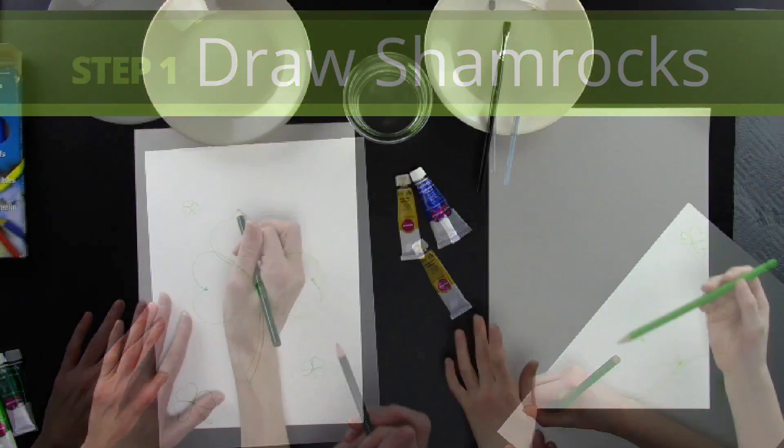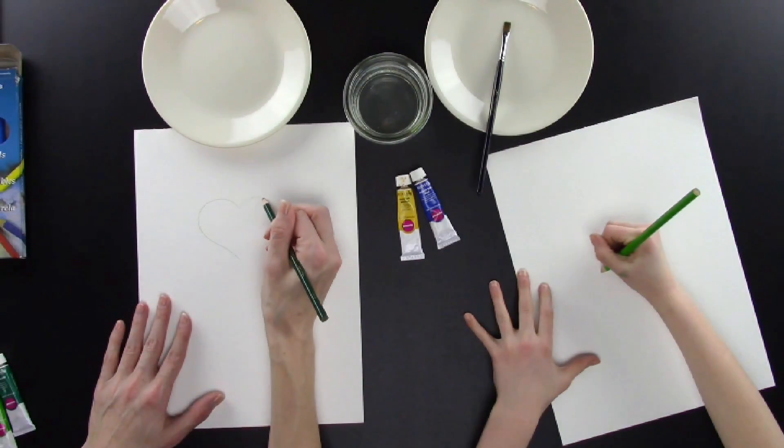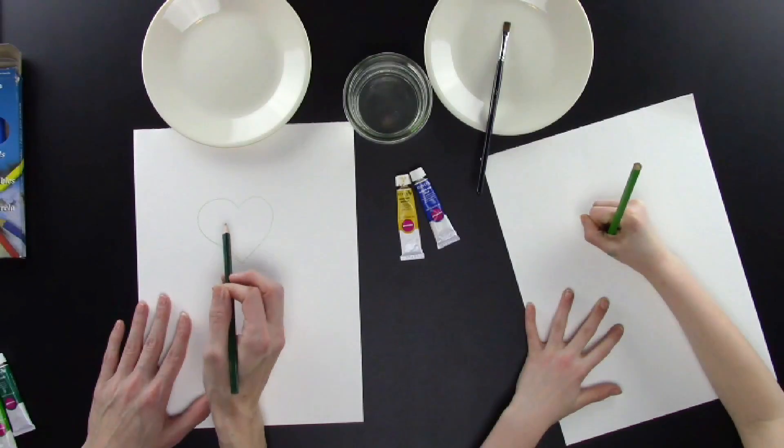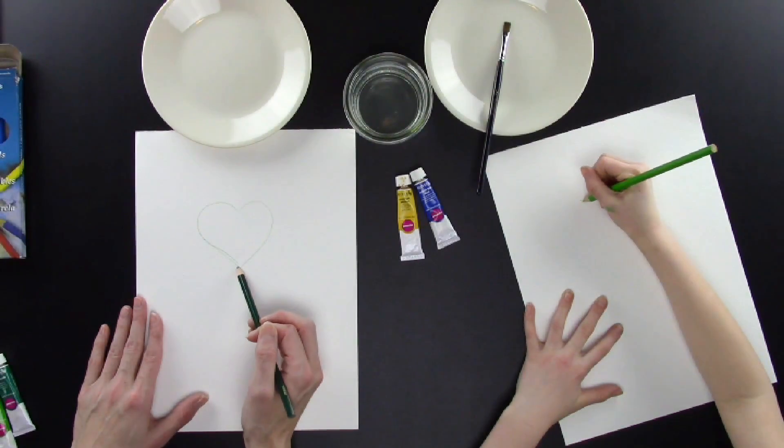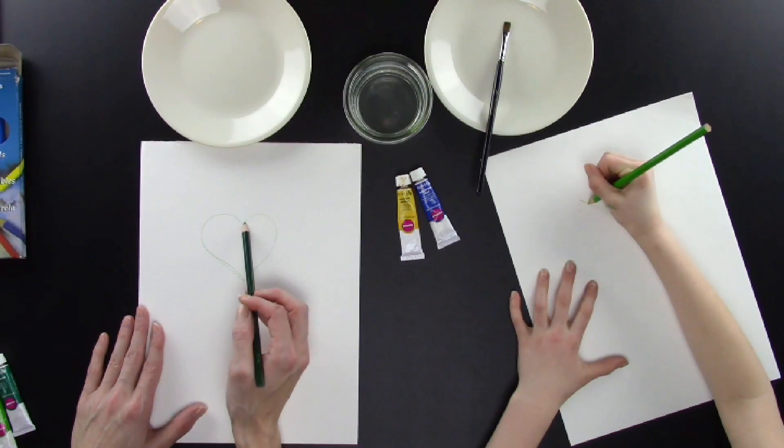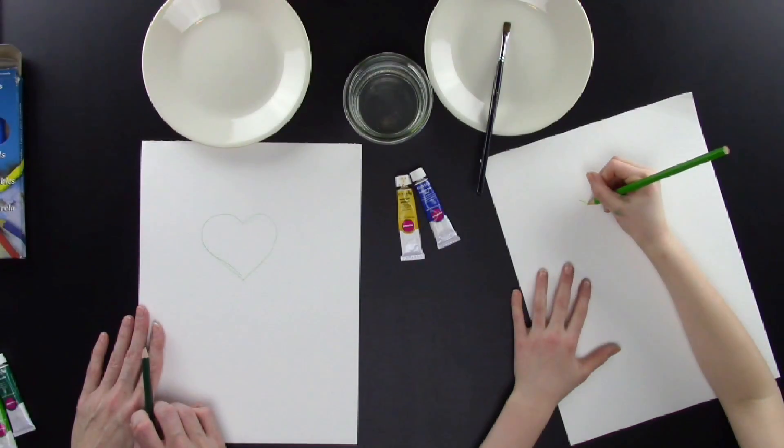Step 1: Draw shamrocks. I'm going to use my green watercolor pencil and I'm drawing a fat heart above the middle of the paper. That's going to be the top of my shamrock. When you're drawing your heart, don't worry about it being perfect. You can always erase it with water and start over again.